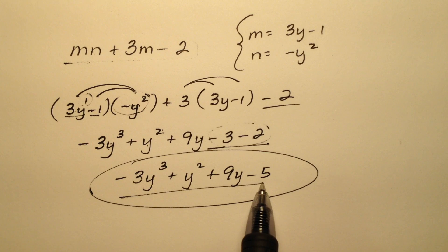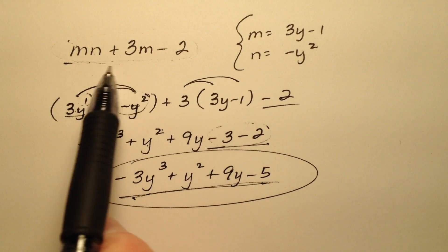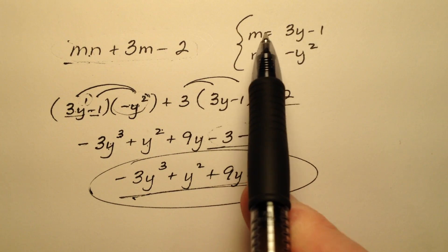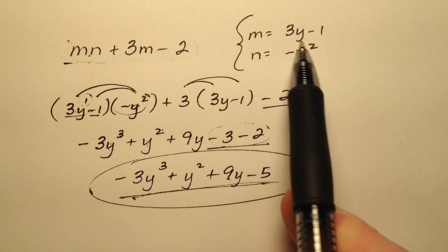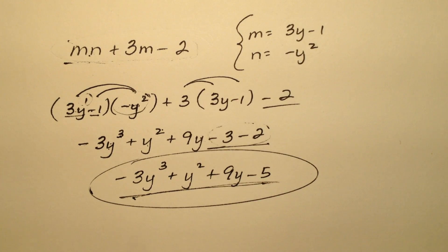So this is the algebraic expression that I get when I evaluate this original algebraic expression for these values of m and n. And remember, values of m and n that we plug in don't have to be numeric. This doesn't have to be like a 3 or a negative 5. They can be other algebraic expressions. And this is what we got.